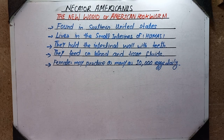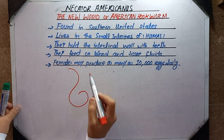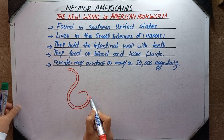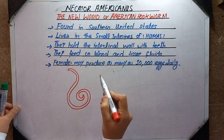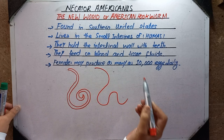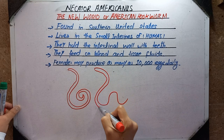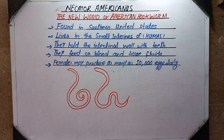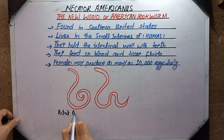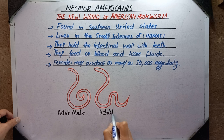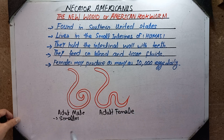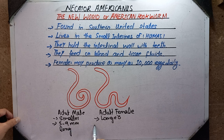Now I am going to draw the male and female parasitic hookworm. This is the male hookworm structure and this is the female hookworm structure. Adult males are smaller than the females. The male's size is 5 to 9 millimeters long and the female's size is 9 to 11 millimeters long.